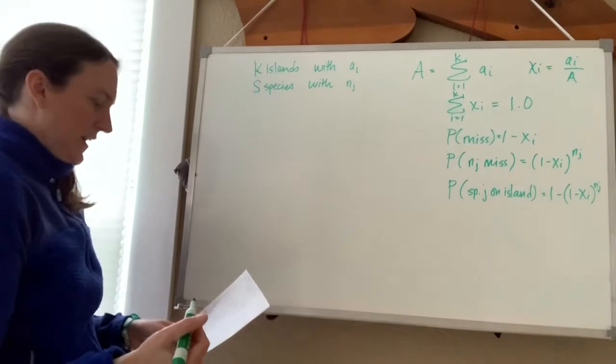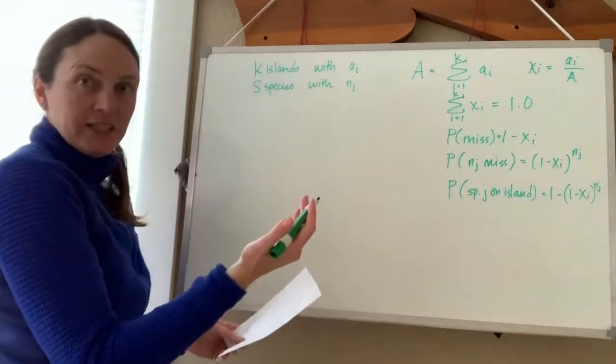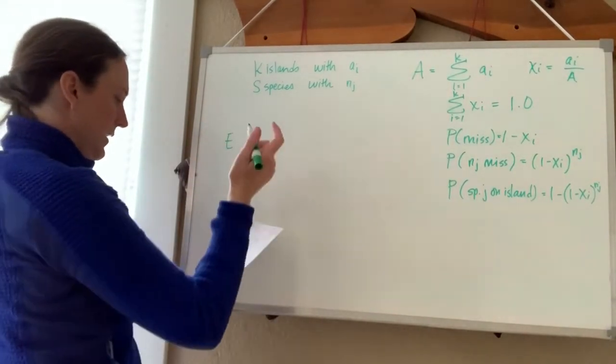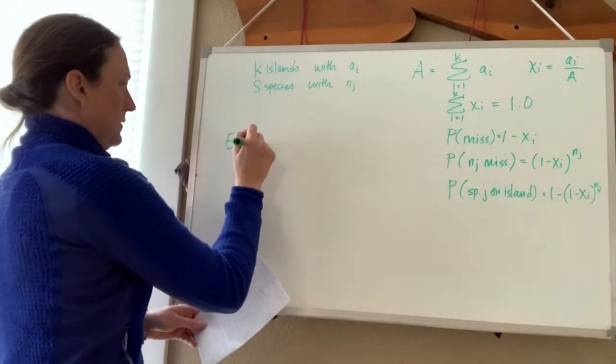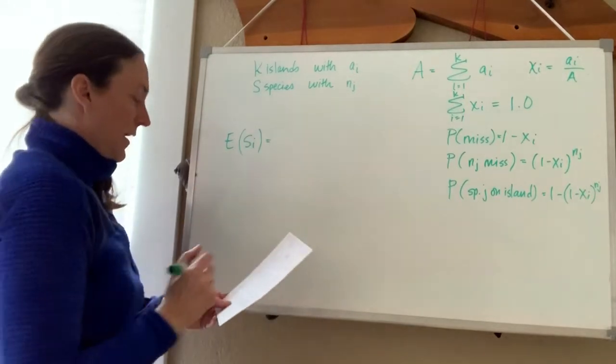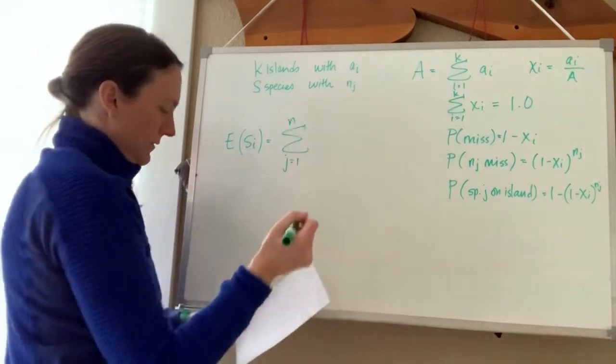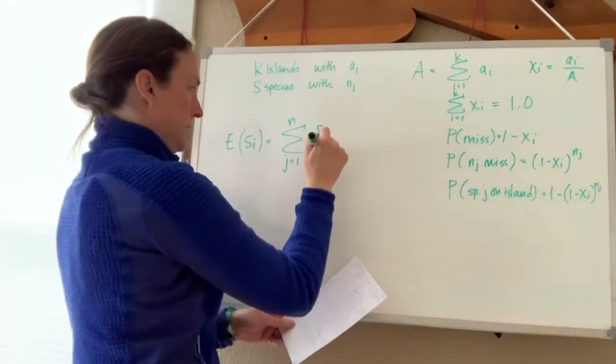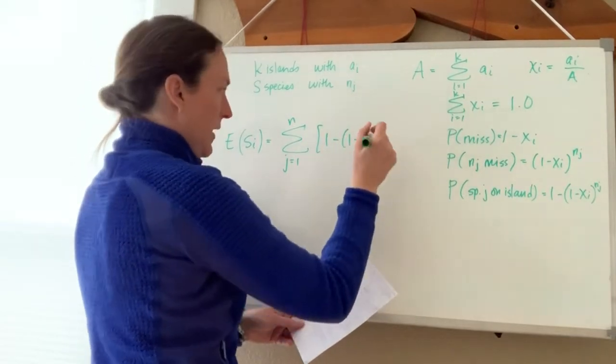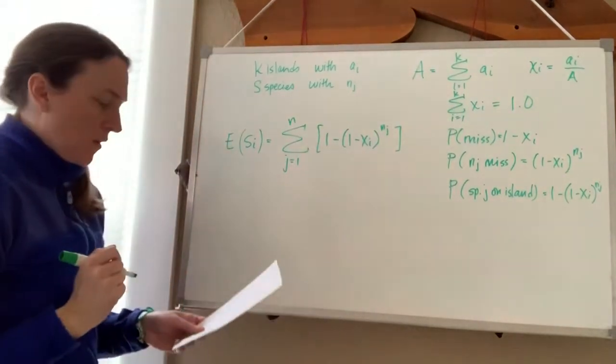So to figure out how many species might be on some projected island, the expected species richness E(S_i) would be the sum from j equals 1 to s of 1 minus (1 minus x_i)^(n_j), if you add them all up.